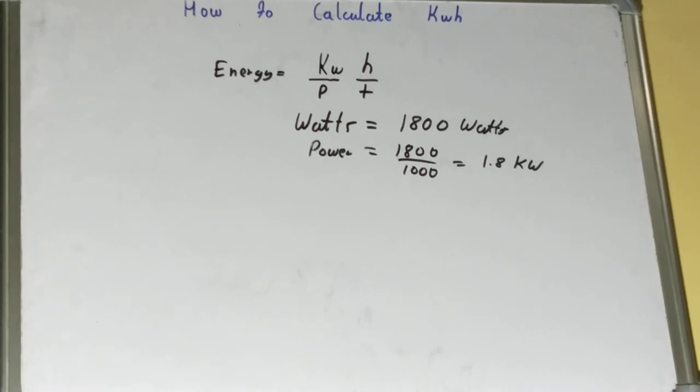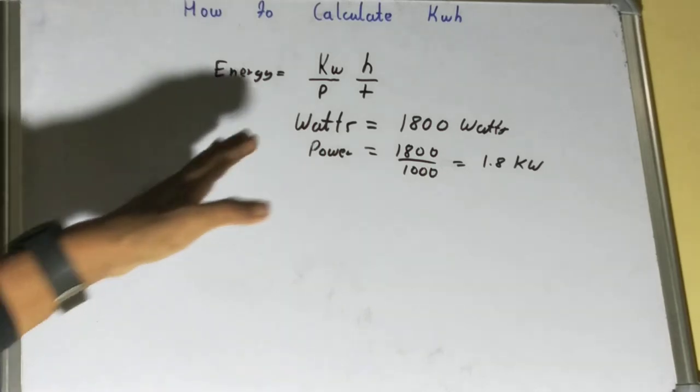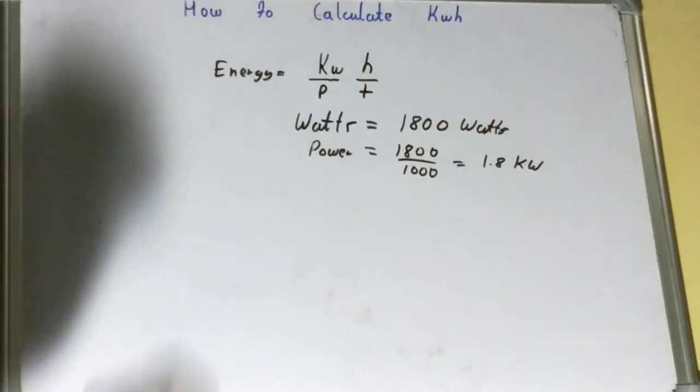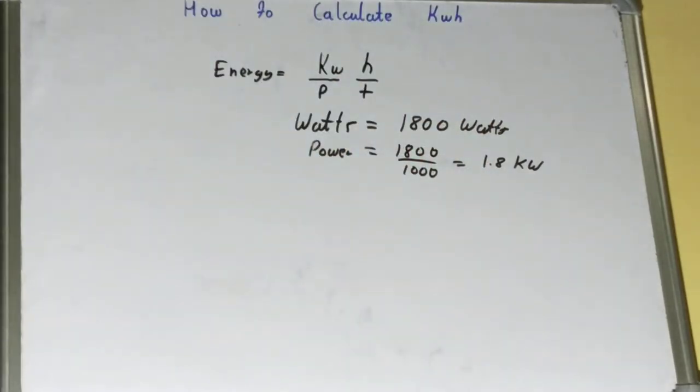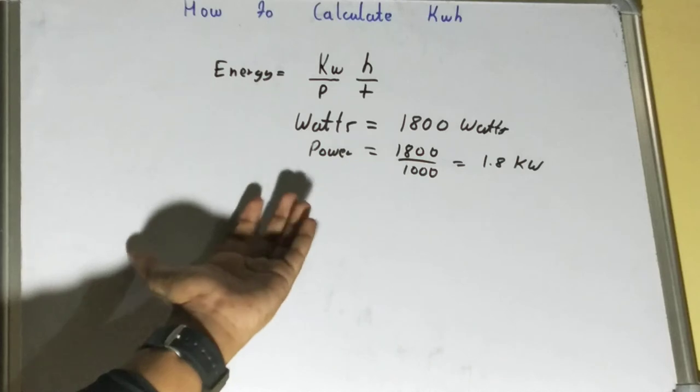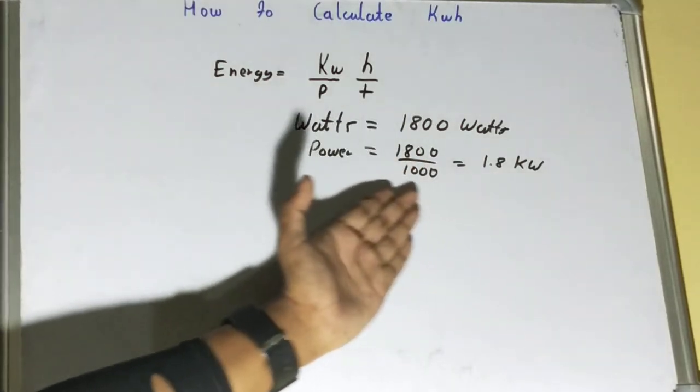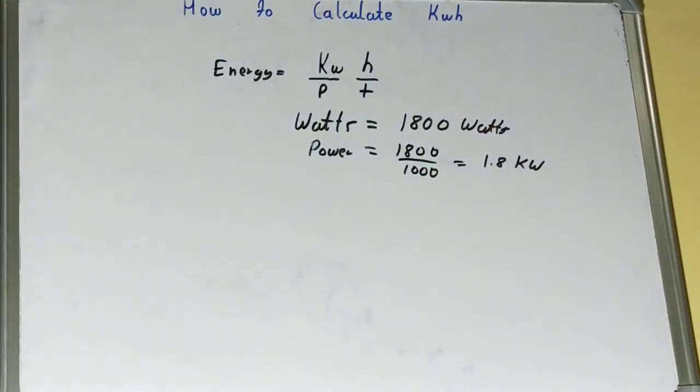Then you can actually use this to find out. So for example, you are given 1800 watts that are used by some appliance. So first what you'll do is you'll find it in terms of kilowatt.